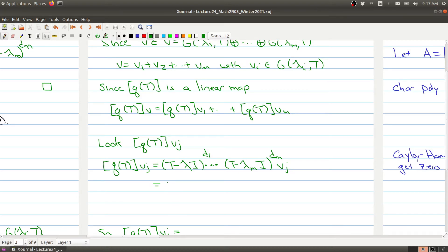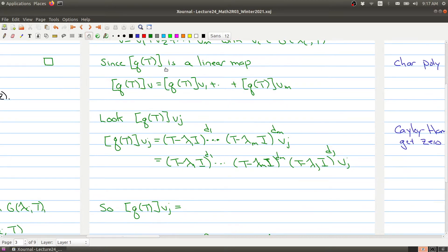So I'm going to push the operator containing λⱼ to the end. I can rewrite this as (T - λ₁I)^d₁ up to (T - λₘI)^dₘ, and imagine this operator showed up in the middle, but now I'm pushing it to the end beside vⱼ. Because the operators commute, I pushed the operator (T - λⱼI)^dⱼ to the end, reordering it so I can push it beside vⱼ.